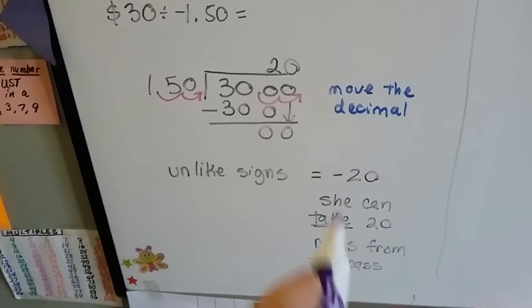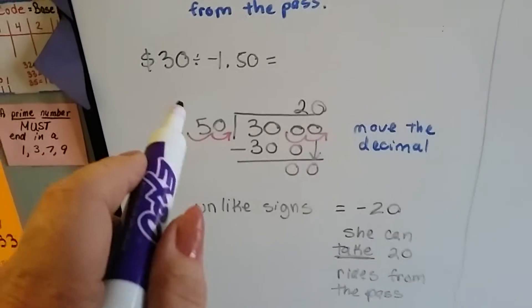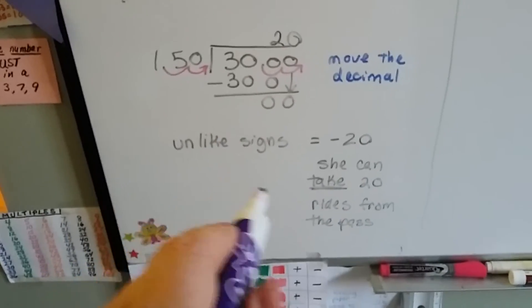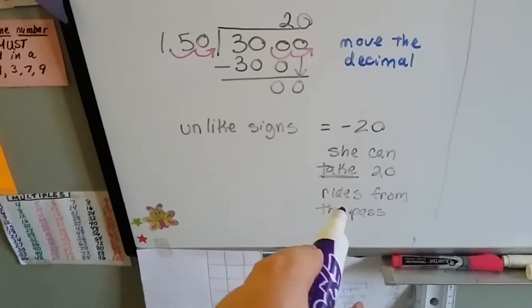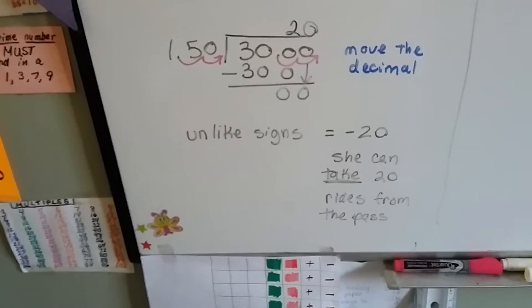So I know that she can ride 20 times on the bus. And because they were unlike signs, she can take 20 rides from the pass, so it's going to be negative 20 because she's taking 20 rides from the pass.